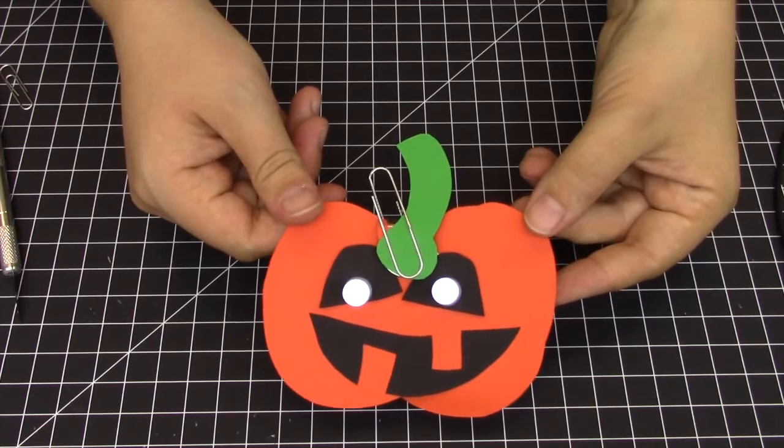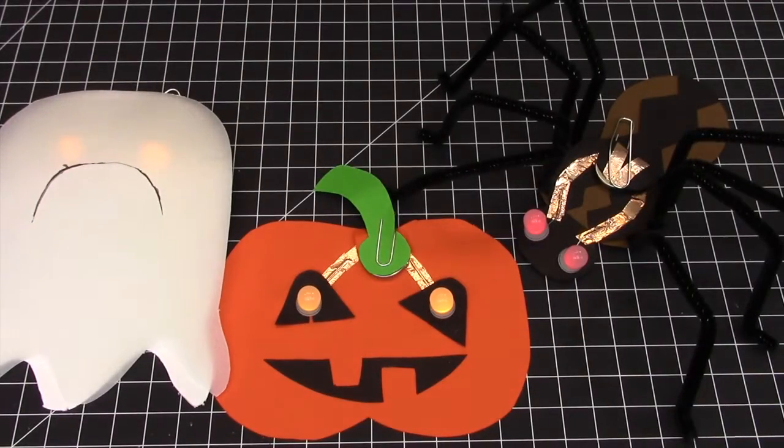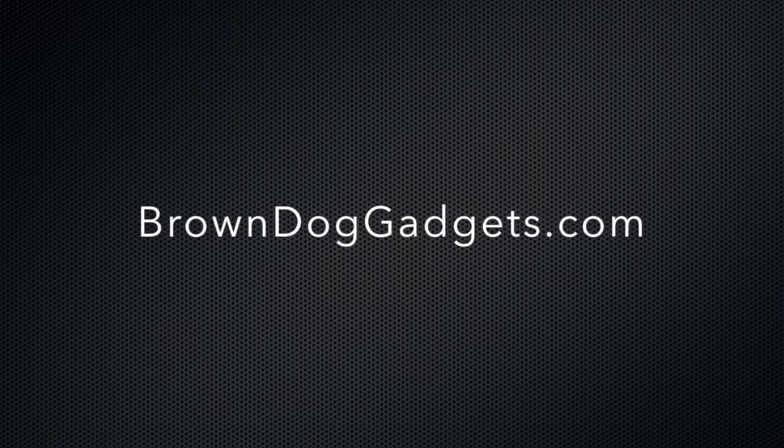Congratulations, you've made a paper jack-o-lantern with light-up LED eyes. Check out some of our other Halloween paper crafts such as the Grumpy Ghost and the Spooky Spider at BrownDogGadgets.com. Thank you.